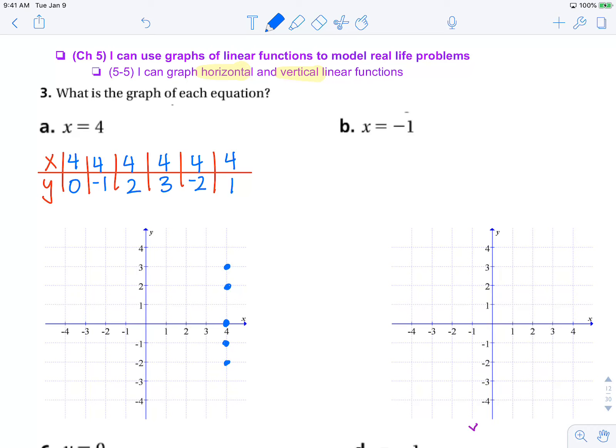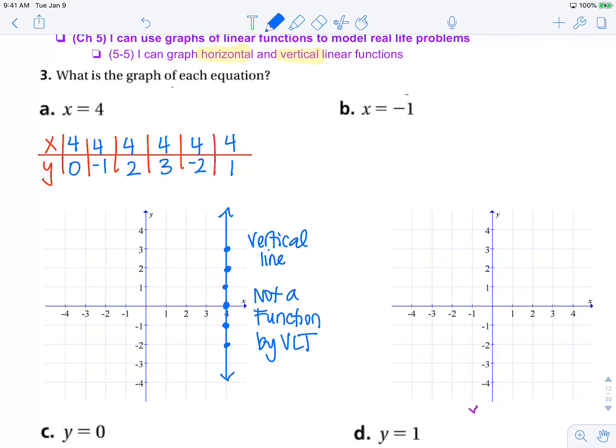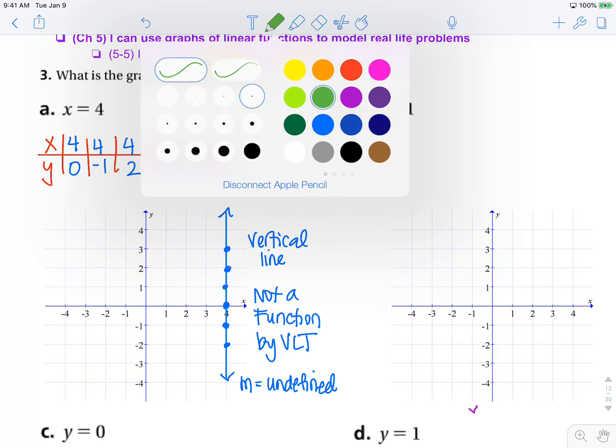We can see that this is creating a vertical line, and that is not a function by the vertical line test. We know that its slope is undefined. So let's quickly graph the second one without making a table.